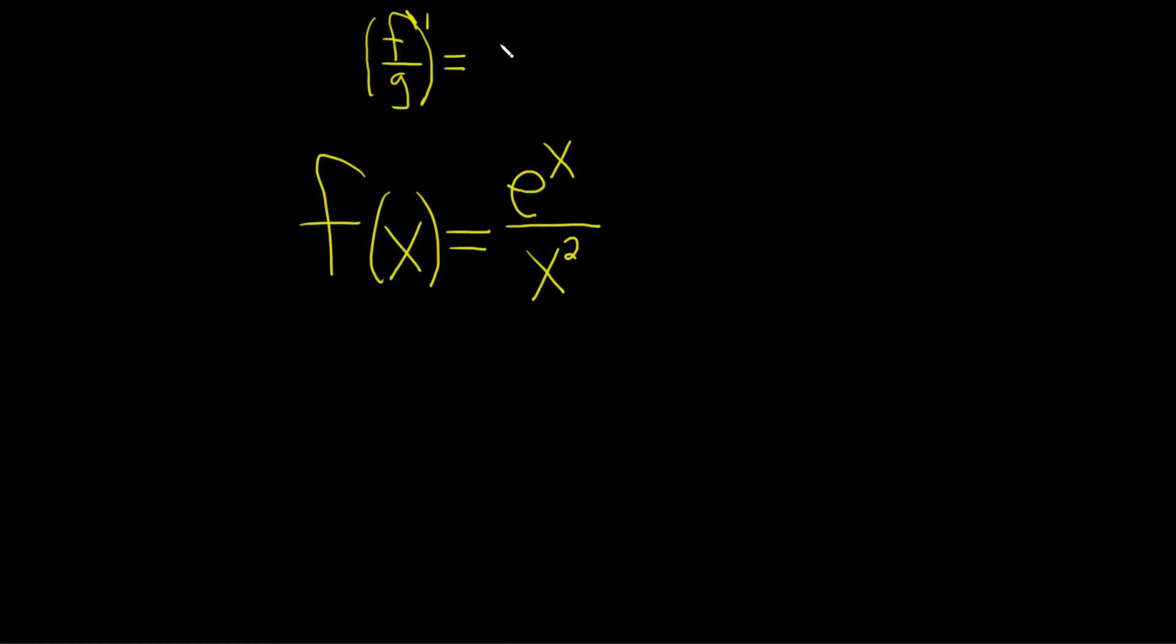And the quotient rule says it's the derivative of the top times the bottom minus the top times the derivative of the bottom, all being divided by the bottom one squared.